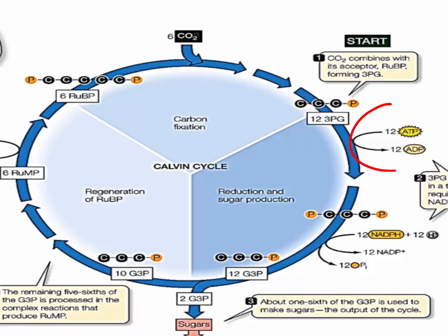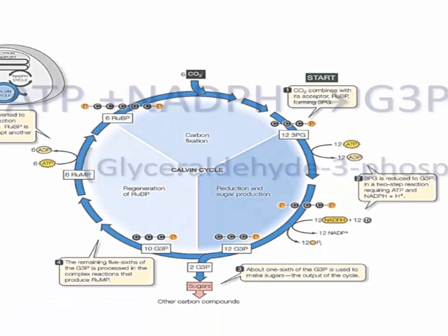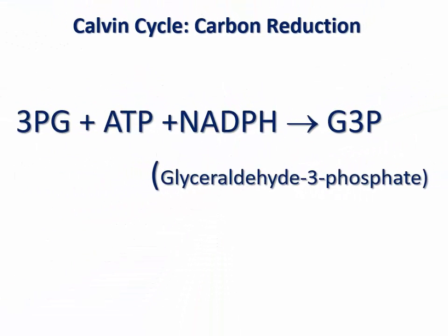This process uses ATP and NADPH produced by the light-dependent reactions of photosynthesis. The overall reaction of carbon reduction is: 3PG plus ATP plus NADPH gives G3P. You may notice here that G3P is the same metabolite produced by the end of the energy-investing stage of glycolysis.